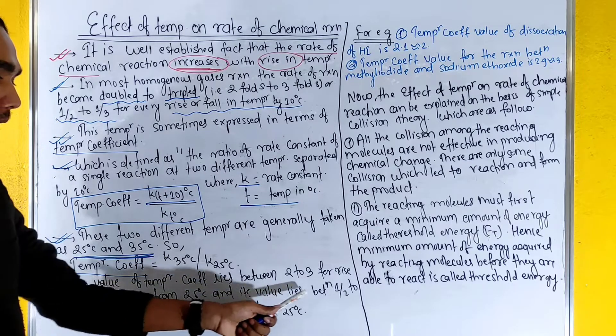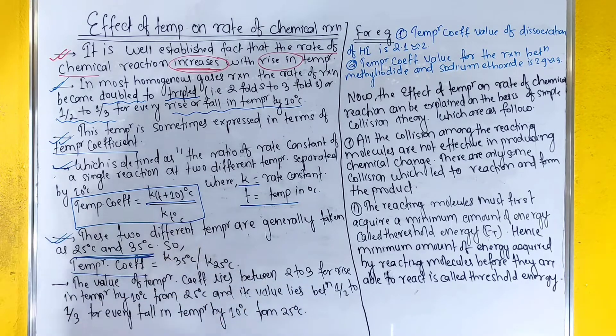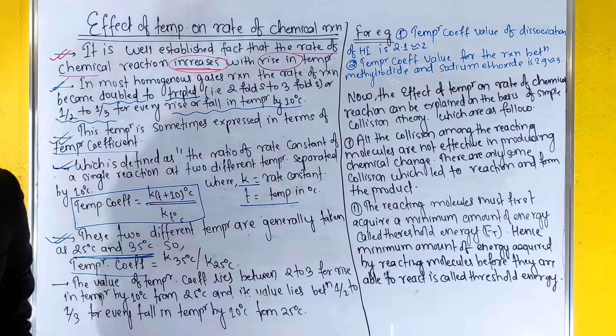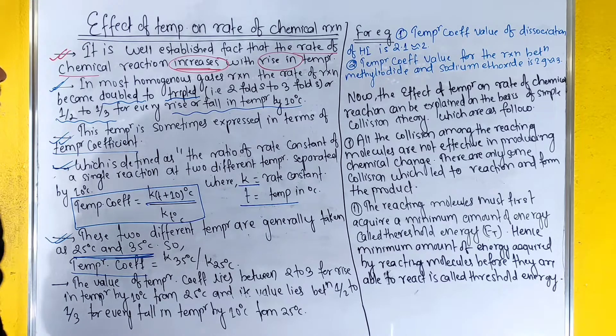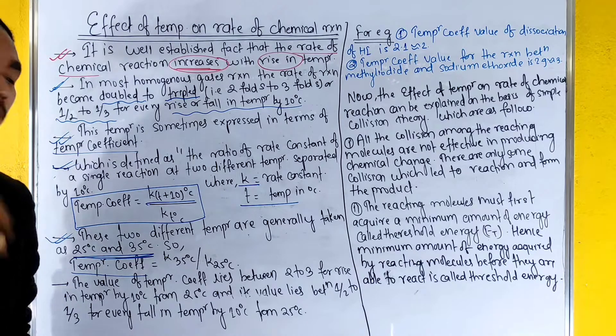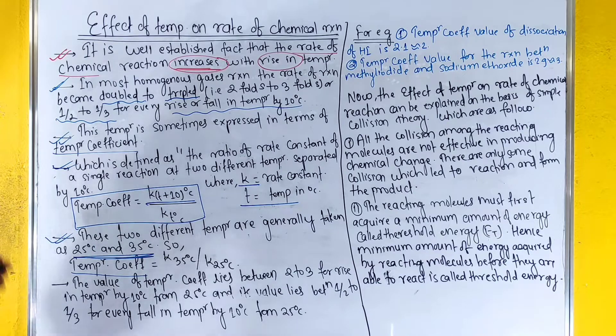The ratio of temperature by 10 degrees Celsius lies in 1/2 to 1/3 for every fall in temperature by 10 degrees Celsius. Fall or rise is the same.